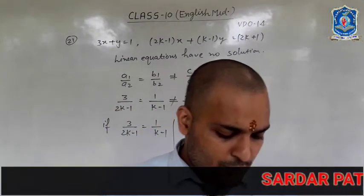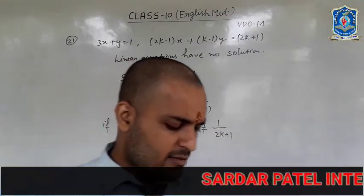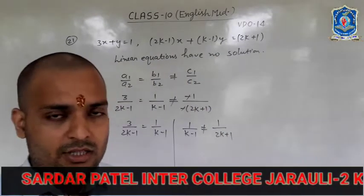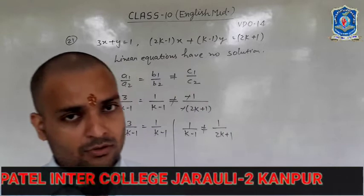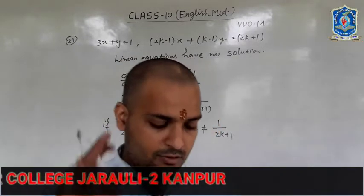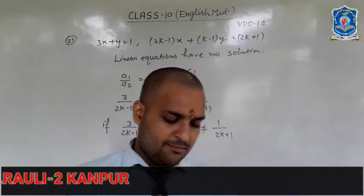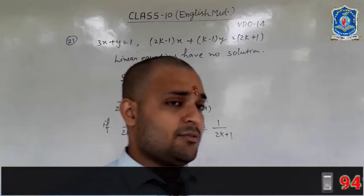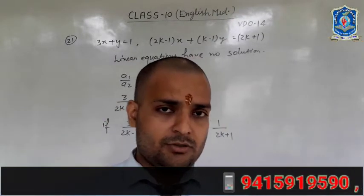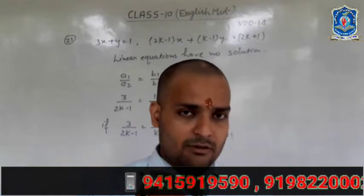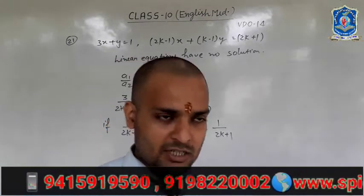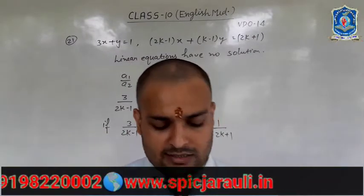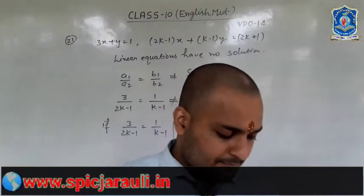For question number 22, find the values of P for which the pair of equations has a unique solution. The condition for a unique solution is A1/A2 does not equal B1/B2, so the answer will be in the form of 'does not equal.' For question number 23, find the values of A and B for which the system has infinitely many solutions. The condition is A1/A2 equals B1/B2 equals C1/C2 — cross multiply to get one equation giving A and another giving B.